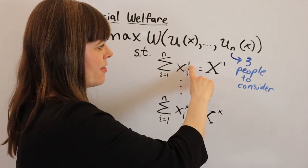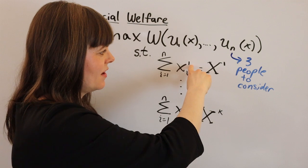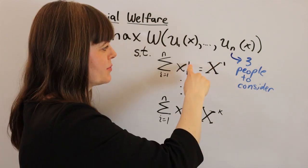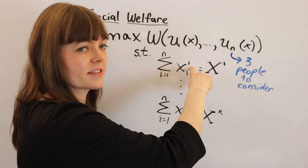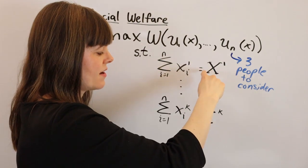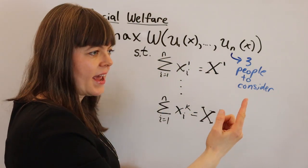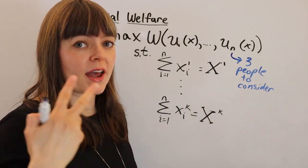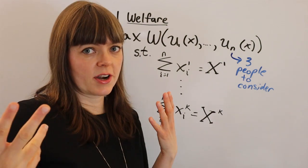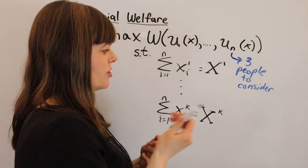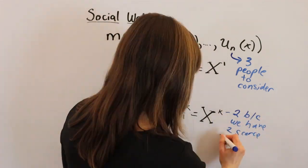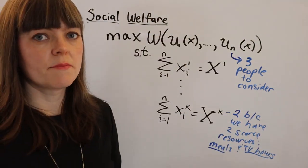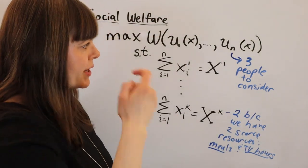And the way to interpret this is not an exponent. This is behaving a little bit more like a subscript where this is just representing this is our first constraint is one. Our last constraint is k, and here in our scenario, we only have two constrained things that we're trying to deal with, and so k is going to be two. Meals and TV hours are constrained.